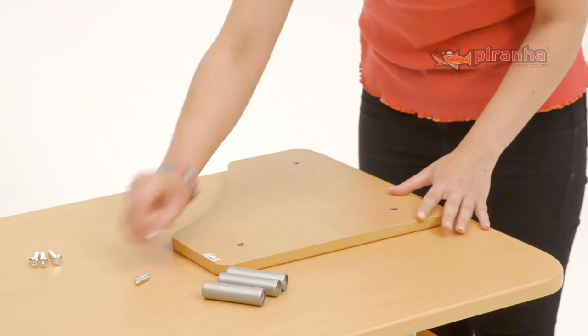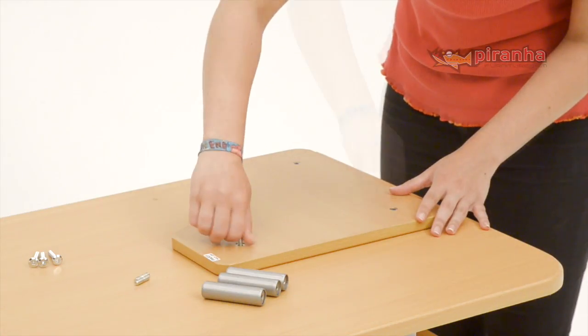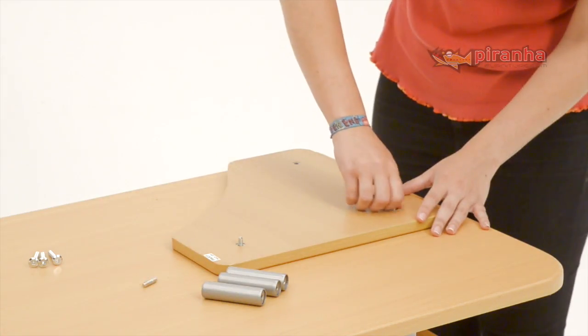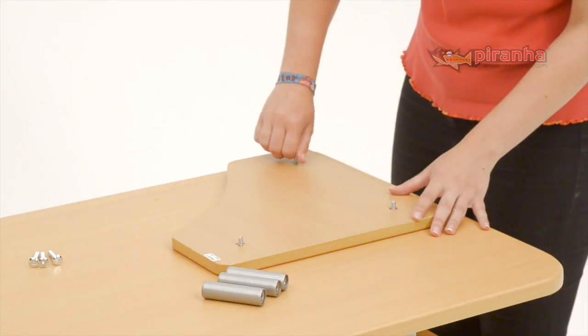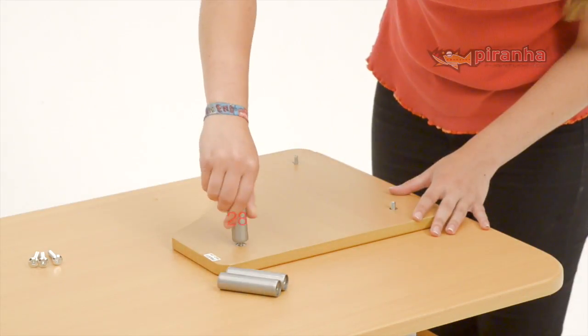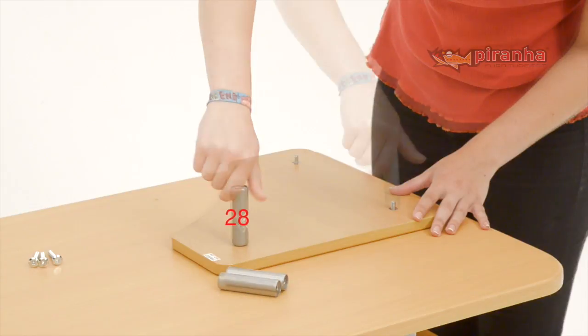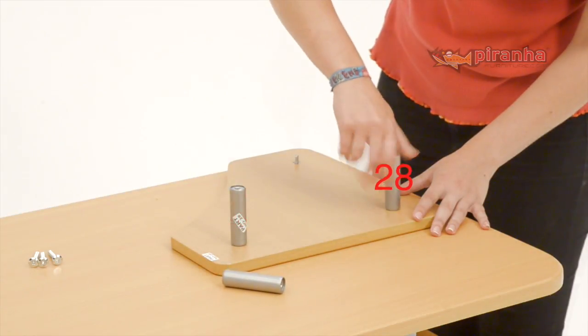Step 23. Using your fingers, thread the double-ended 6x25mm bolts into the base of the raised shelf. Then, screw the three support poles onto the other end of the threaded bolts until finger-tight.